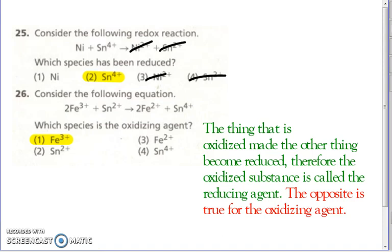Number 26 — talks about an oxidizing agent. The oxidizing agent is the thing that is reduced. The thing that is oxidized is the reducing agent. The thing that is reduced made the other thing oxidized. So the oxidizing agent is the thing that is reduced. Fe goes from a plus two to a plus three — oxidation number is going up — so that's oxidized. Wait — Fe goes to a plus three here, so a plus two going down — that is the thing that is reduced. Therefore, it is the oxidizing agent.